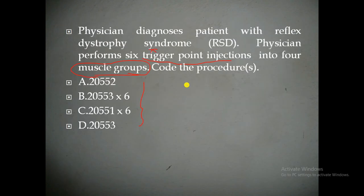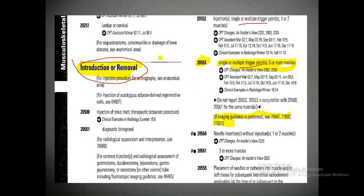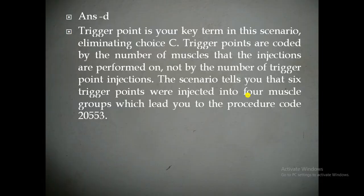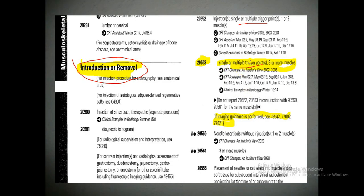So here, how many trigger point injections into how many muscle groups? 4 muscle groups. So we should not look at the trigger point count — we have to see how many muscle groups the physician is injecting. In the scenario it is 4 muscle groups. Code 20552 covers 1 or 2 muscles, so that is not the correct answer. Under this subsection, 20553 covers single or multiple trigger points into 3 or more muscles. So here is the answer.